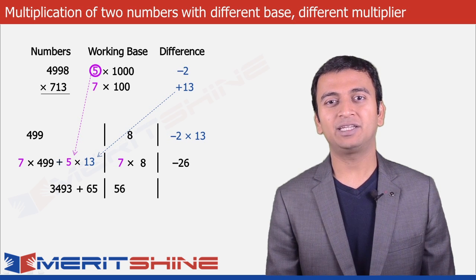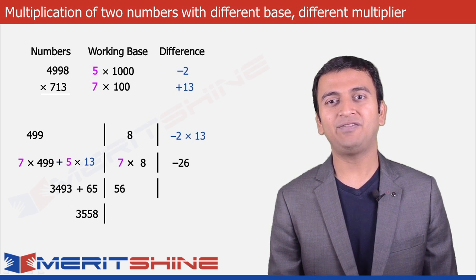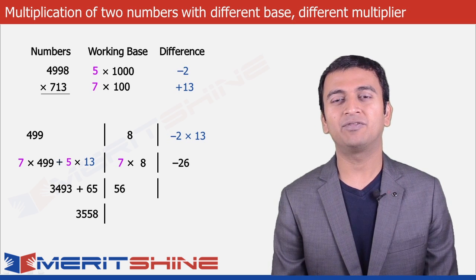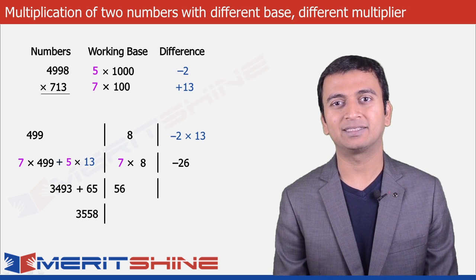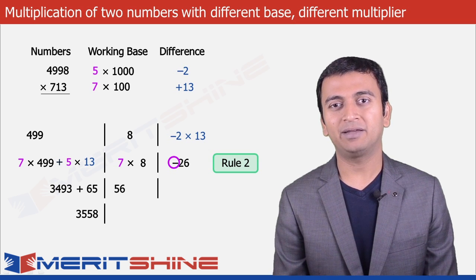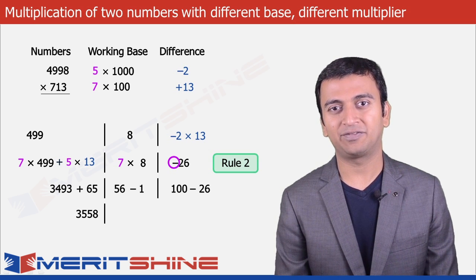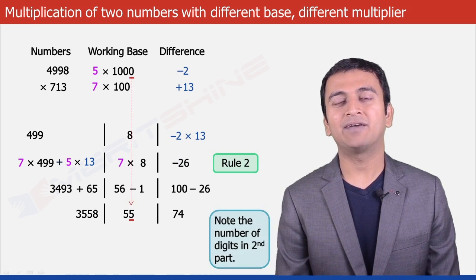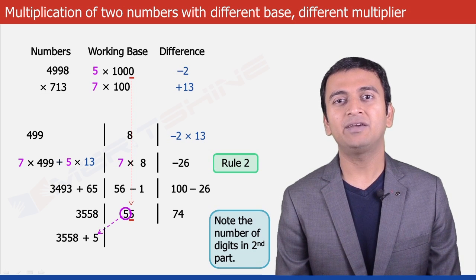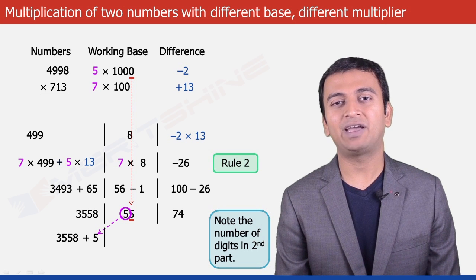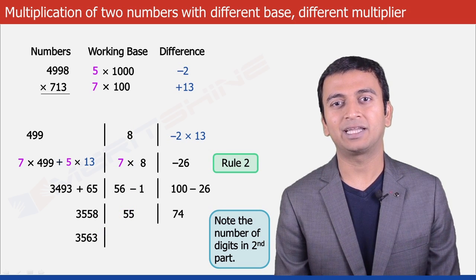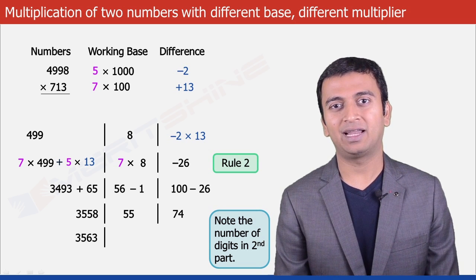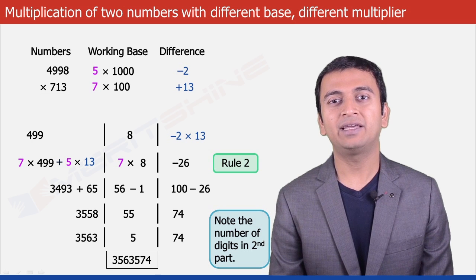So our first part becomes 3493 plus 65, giving us 3558. Now we will have to make some final adjustments. As per the second rule, we cannot have a negative in any of our answer parts. So the third part, minus 26, will need to borrow a 1 from the second part, making it 100 minus 26, which is 74. The second part now becomes 56 minus 1, which is 55. Since the second part can have only one digit, the extra 5 is carried over to the first part, making it 3558 plus 5, giving 3563. We can now club these and write down our final answer as 3563574.